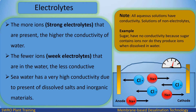Seawater has a very high conductivity due to the presence of dissolved salts and inorganic materials. Note: all aqueous solutions have conductivity. Solutions of non-electrolytes — for example, sugar — have no conductivity because sugar does not contain ions, nor do they produce ions when dissolved in water.